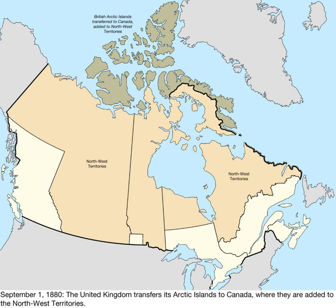After the 1880 transfer, Canada gradually incorporated the islands with Rupert's Land into the Northwest Territories. The transfer was necessary over the fear of American interest in the area as part of the Monroe Doctrine. On April 1, 1999, the territory of Nunavut was created from the eastern portion of the Northwest Territories.